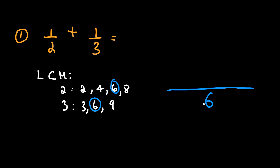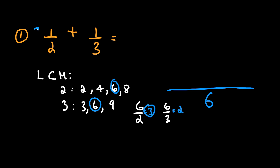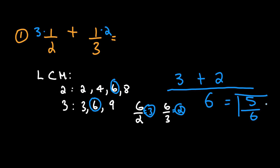Six will now be our denominator. Go ahead and divide six by two and divide six by three. Six divided by two is three, and six divided by three is two. Now take that two and multiply it by one — so three times one is three. Three plus two gives us five over six.